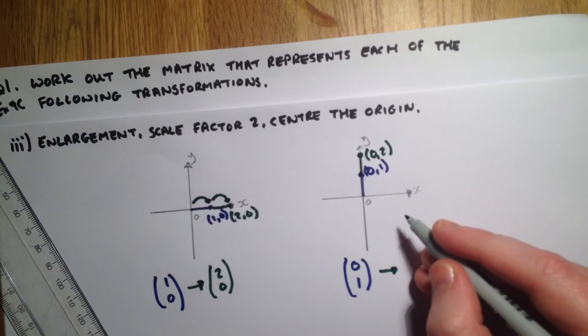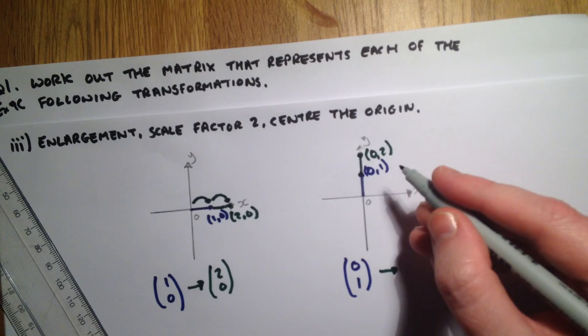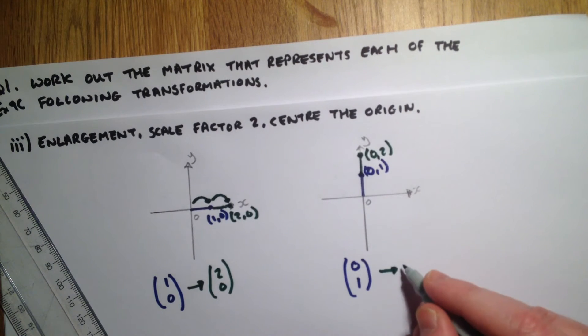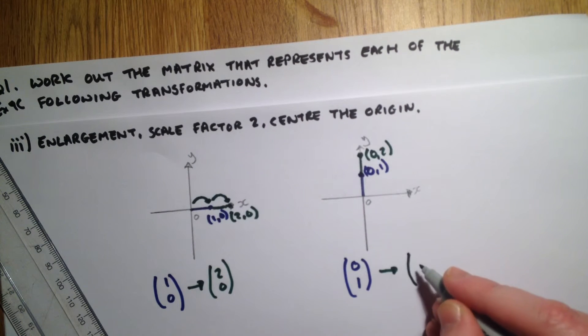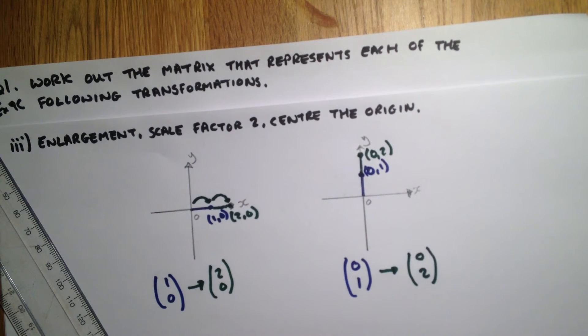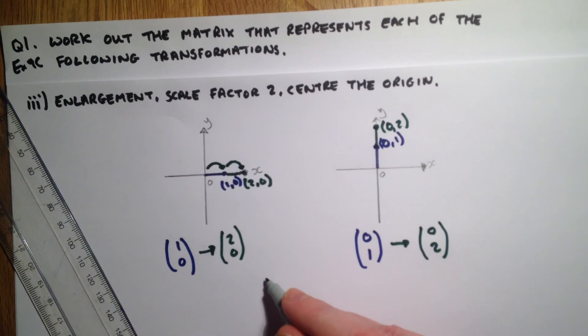But it doesn't really matter, as long as you've understood that that is twice as far away. So that becomes (0,2), so your matrix for transformation then is [[2,0],[0,2]].